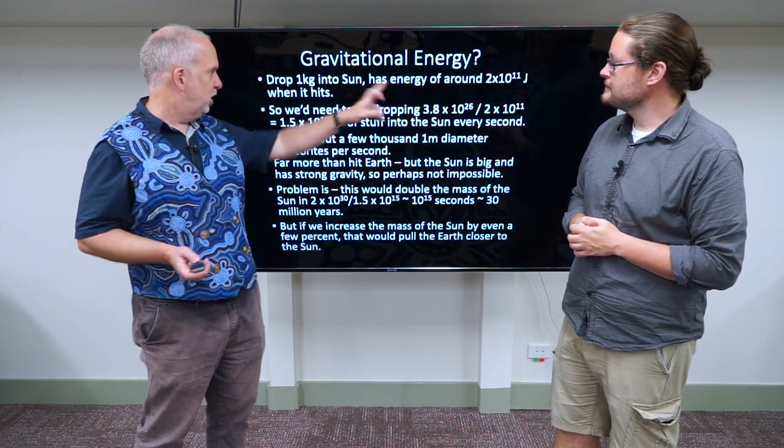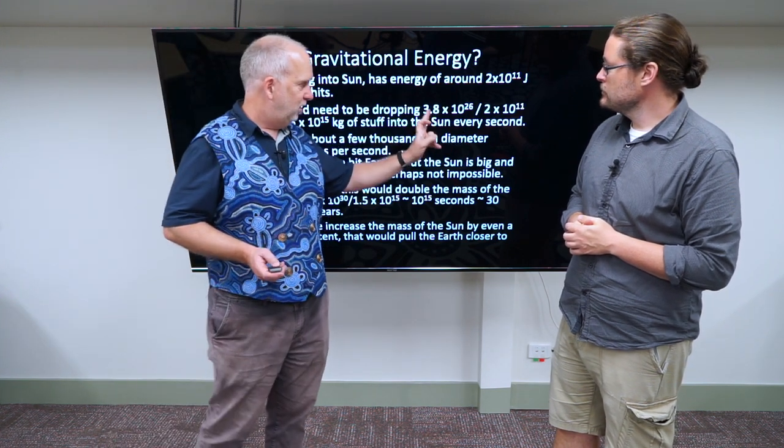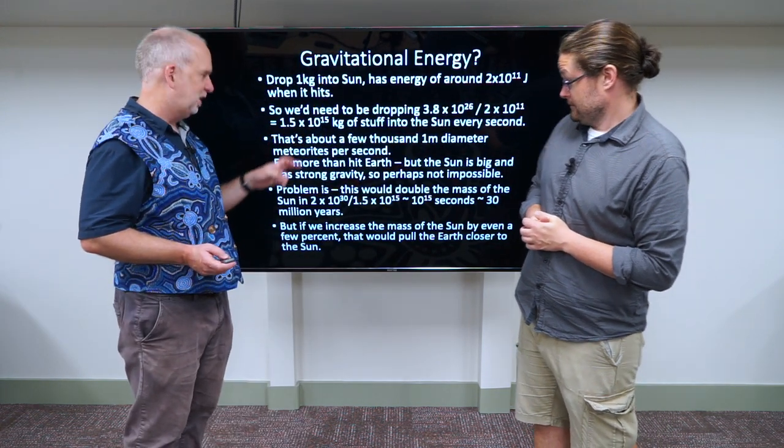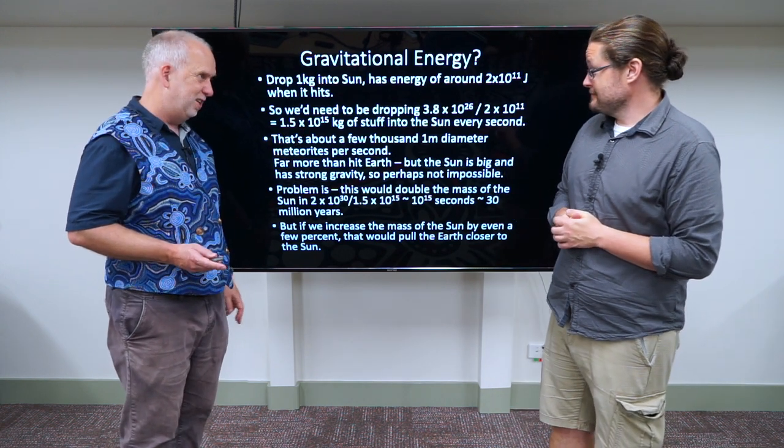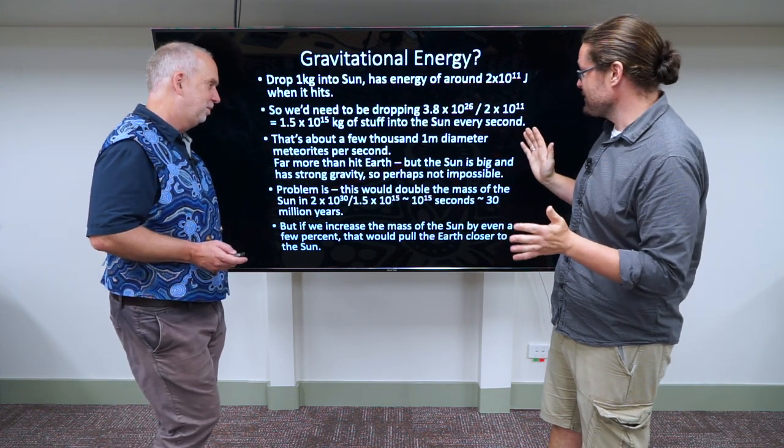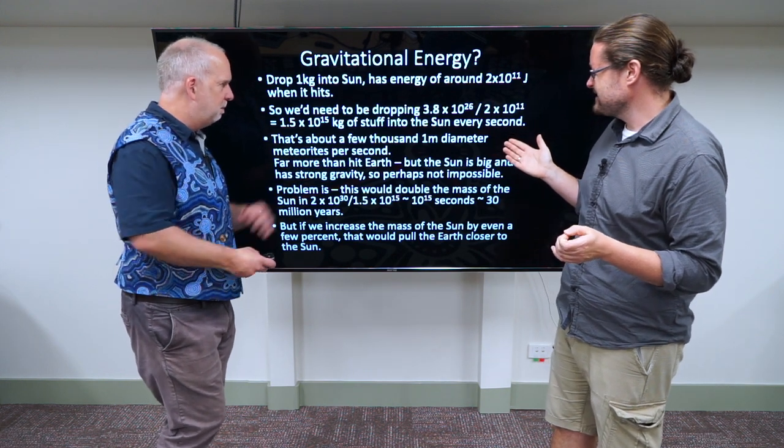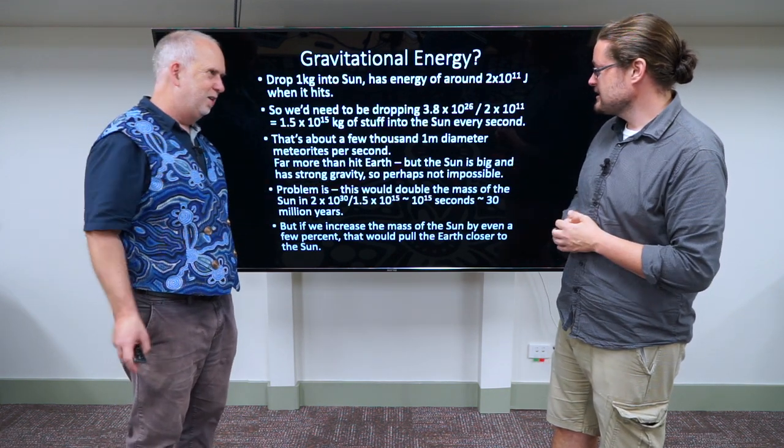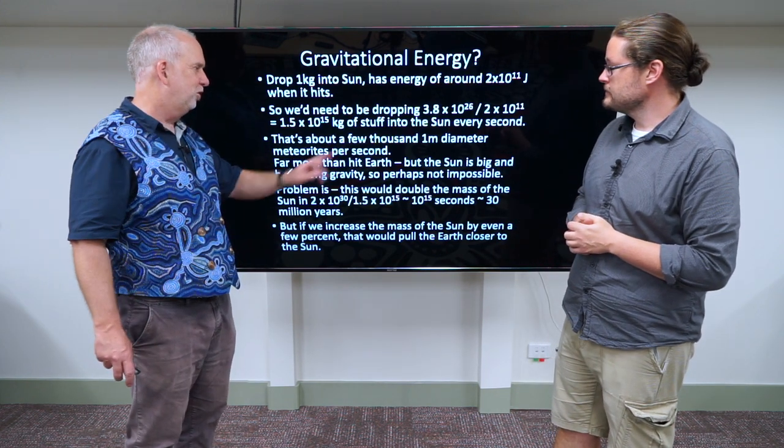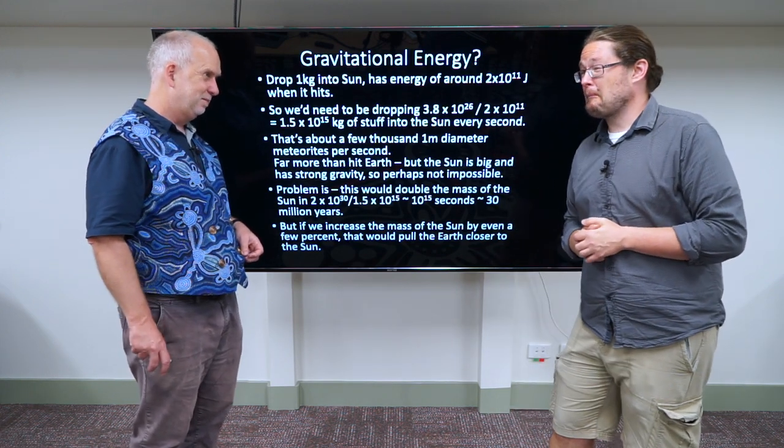How many? We've seen you get this much energy for dropping one kilogram into the sun. Now that's the amount of energy it puts out per second. If you take this and divide it by that, it tells you how many kilograms you have to drop in per second, which is about 10 to 15, one followed by 15 zeros. We're getting into the quintillion worth of numbers here. But a meteorite that's a meter in diameter weighs a tonne, about a thousand kilograms. So a few thousand meter diameter would do it. Plausible?